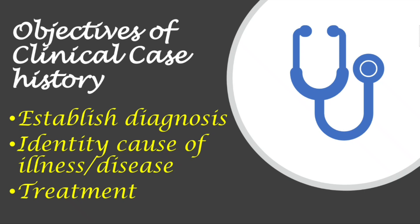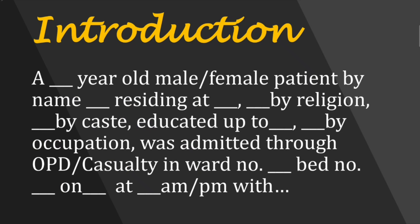The objectives of the clinical case history are basically to establish the diagnosis, identify the cause of the illness or disease, and determine the treatment. The format for taking a clinical case history begins with introducing the patient: you write the age, sex, name, address, religion or caste, education, occupation, and whether admitted via OPD or casualty.